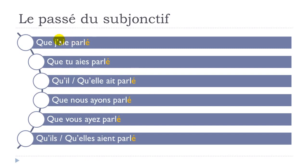Note that the participe passé ending — the -é — stays the same regardless of gender in this avoir structure. Even if the subject is feminine, nothing is added to the participe passé. That's the passé du subjonctif for the verb parler, to speak.